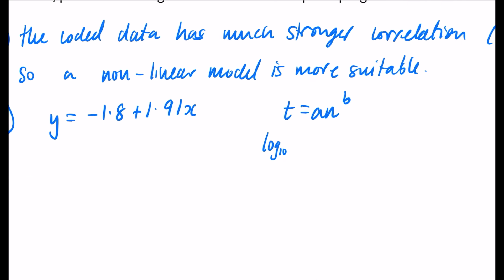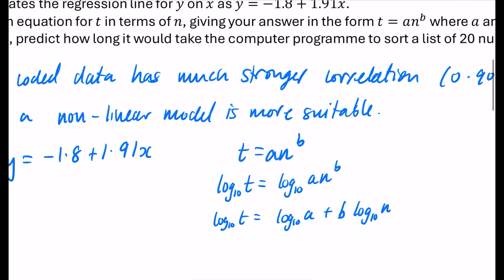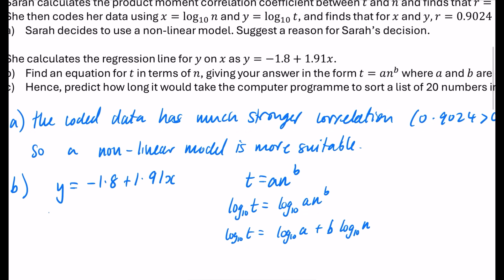Now the instructions were to take logarithms and then compare coefficients. So I'm going to take logs here. So I have log base 10 t equals log base 10 of a n to the b. Now you might think you can pull the b down. You can't do that because the b is only with the n. So the first thing we need to do is to separate them as log base 10 a. And then we get log base 10 of n to the power of b. But that power of b I can put in the front as a coefficient like this. Now using the coding, I can see that y is log base 10 t. And I can see that x is log base 10 of n.